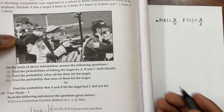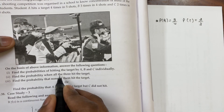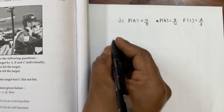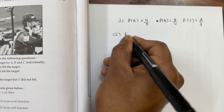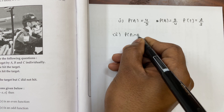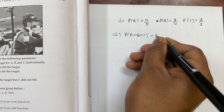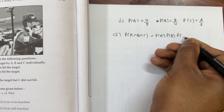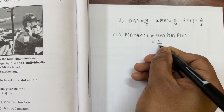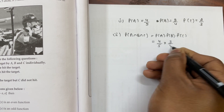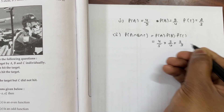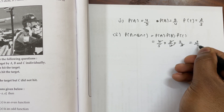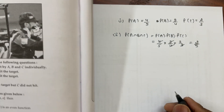Second part: Find the probability when all three hit the target. This means probability of A intersection B intersection C, which equals probability of A into probability of B into probability of C. So that is 4 by 5 into 3 by 4 into 2 by 3. The 4s cancel and the 3s cancel, giving us 2 by 5.